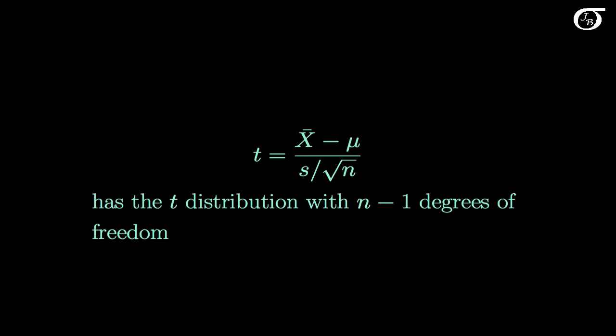When we are sampling from a normally distributed population, the quantity x̄ minus μ over s over the square root of n has the t-distribution with n minus 1 degrees of freedom.